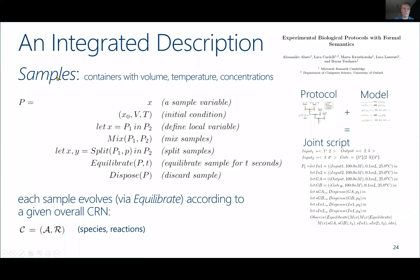The fundamental notion in this integrated language is a sample — basically a test tube. A sample has a volume, a temperature, and concentrations for the chemical species inside. The language manipulates samples: there are sample variables, initial conditions, and local variables. The operations are: mix two samples, split a sample into two parts X and Y by some proportion, equilibrate a sample by letting it sit so chemical reactions can execute for time T, and dispose of a sample.